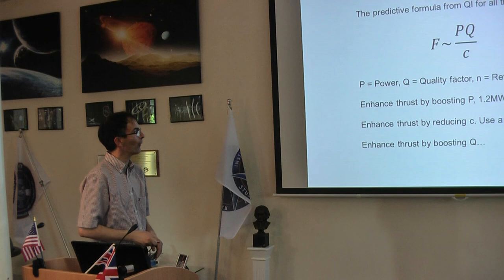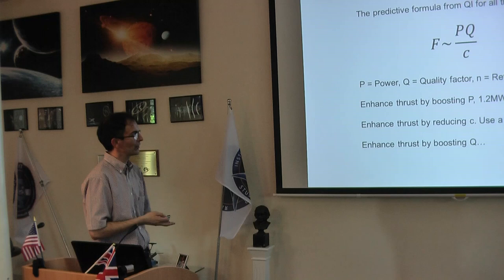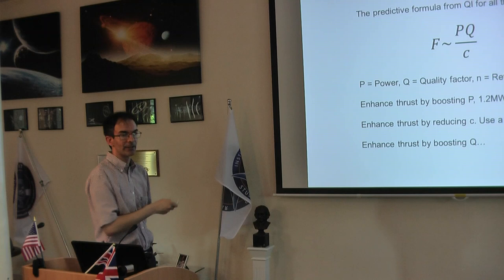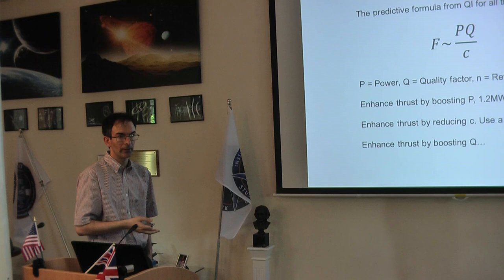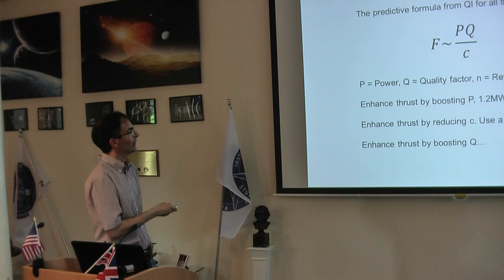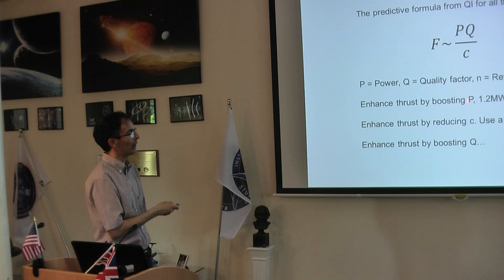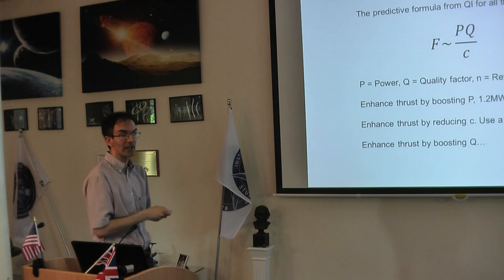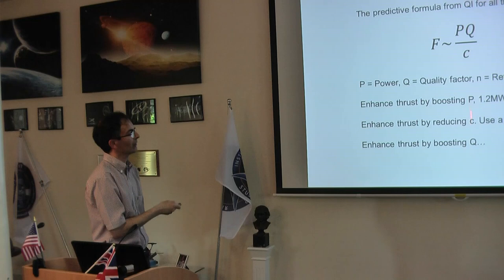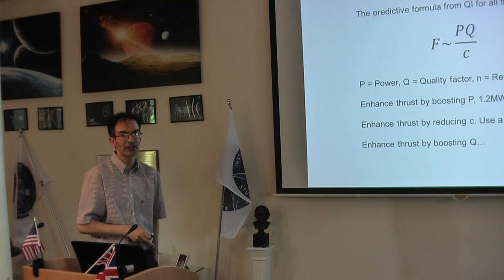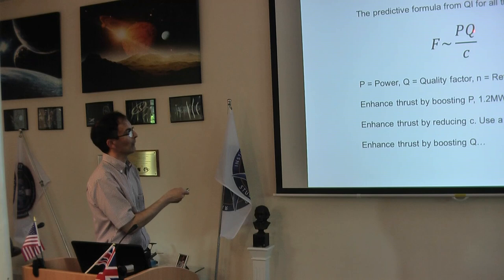But quantized inertia offers a way to enhance this. The predictive formula for the thrust force in quantized inertia looks like this. The force is power you put into this cavity, the Q factor of the cavity, the number of times the photons bounce around inside the cavity, divided by the speed of light. So you can enhance the thrust by either boosting the power, and it turns out that if you can put 0.2 megawatts in, you can get levitation, but your cavity would melt first. You can enhance the thrust by reducing c in the formula. So I was suggesting in one of my papers that a dielectric could be put into the EmDrive, which would reduce the speed of light. Or you can enhance the thrust by boosting Q.